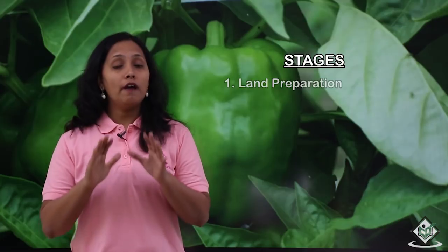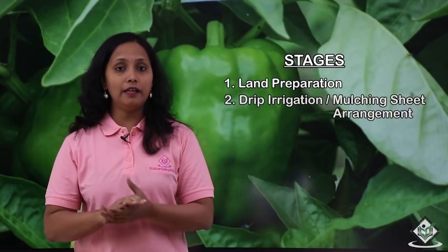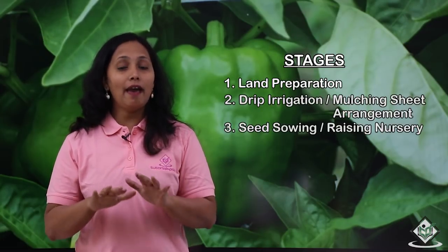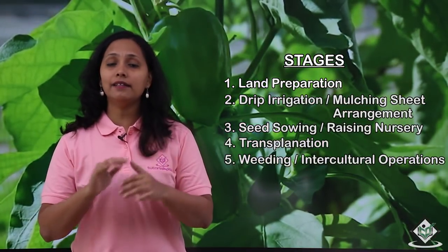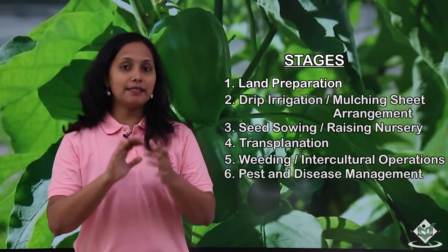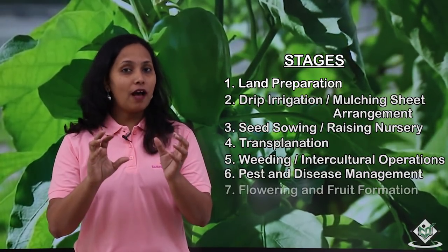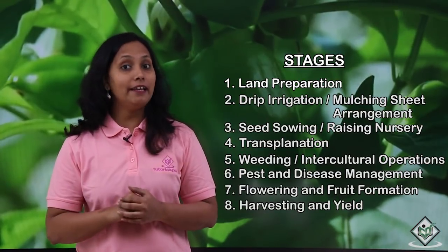The ideal temperature for the cultivation of capsicum crop ranges from 25 degrees centigrade to 30 degrees centigrade. Let us now see the stages involved in the cultivation of capsicum crop. The stages are: land preparation, drip irrigation and mulching sheet arrangement, seed sowing and raising nursery, transplantation, weeding and intercultural operations, pest and disease management, flowering and fruit formation, and harvesting and yield.